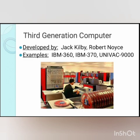Examples of third generation computers include IBM 360, IBM 370, UNIVAC 9000, ICL 2900, PDP 8, PDP 11, and PDP 860. They were smaller than previous generations. Magnetic tape was used as a storage device, and third generation computers could perform millions of instructions per second.